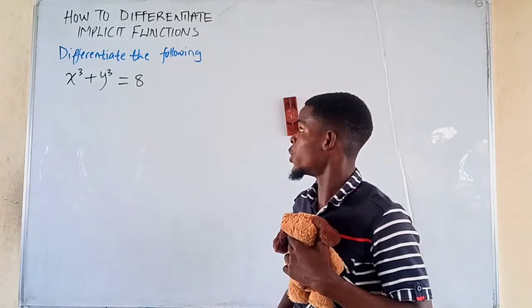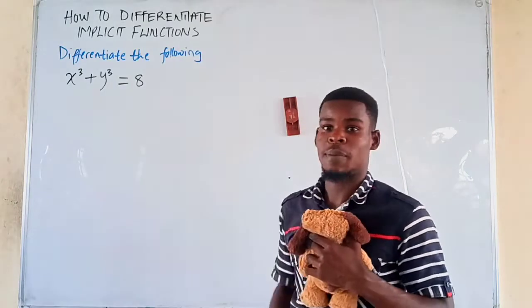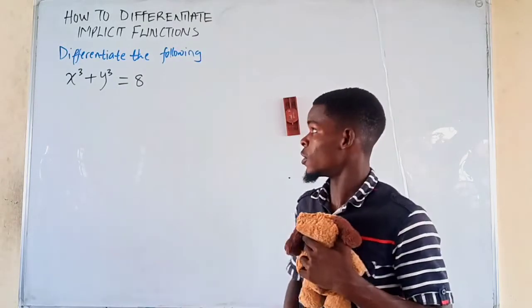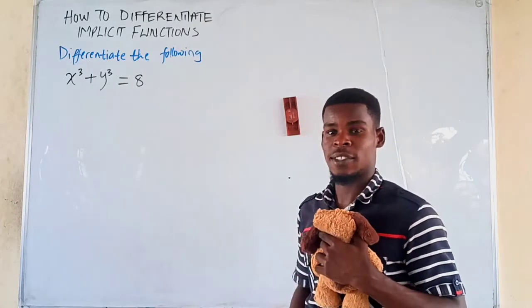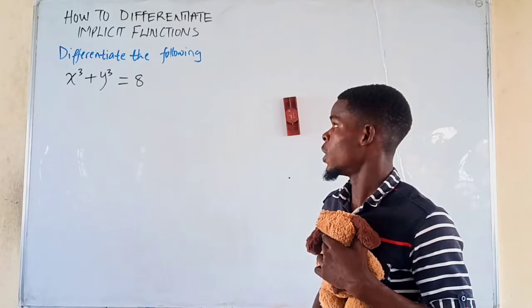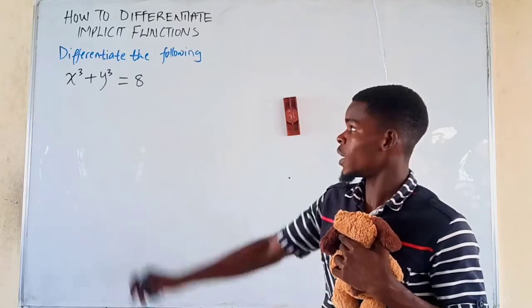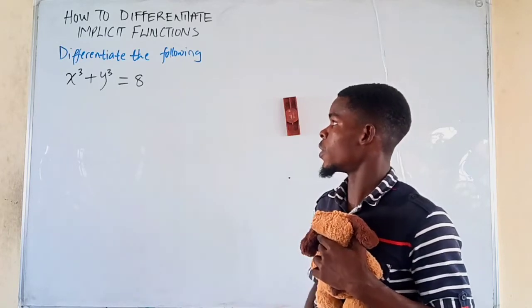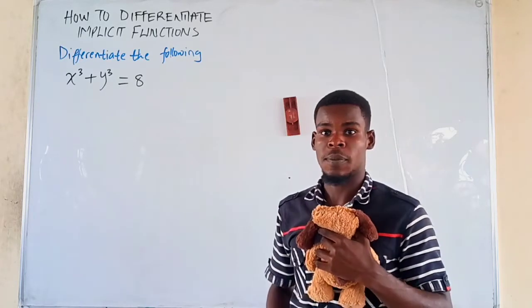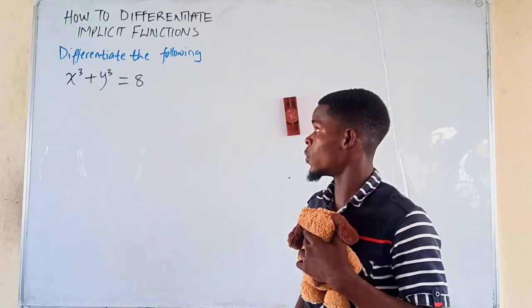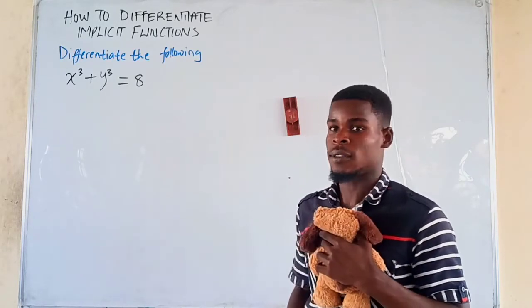Now we're going to differentiate this implicit function, just by using the chain rule. We have it there to be x raised to the power of 3 plus y raised to the power of 3 equals 8.